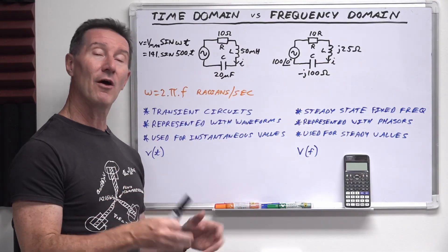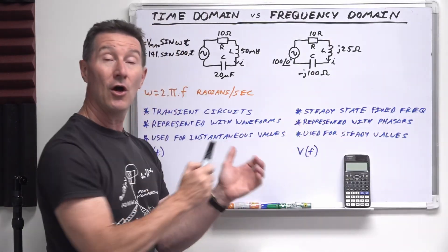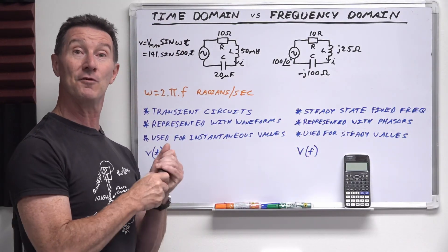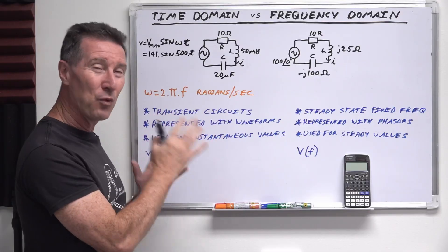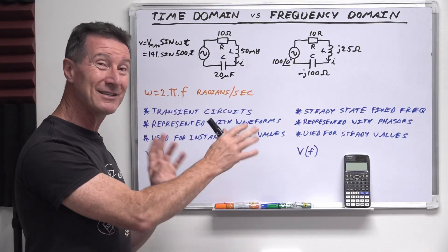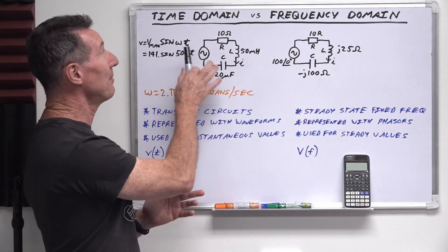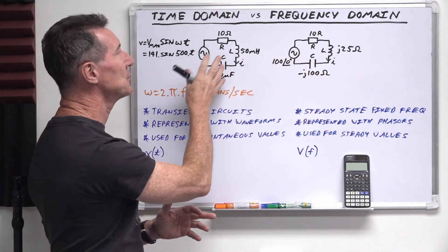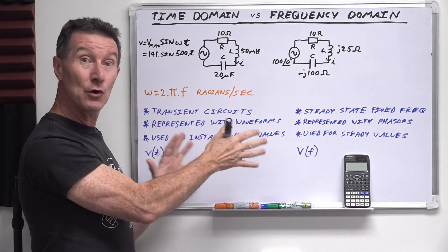Whereas your spectrum analyzer would operate in the frequency domain where you would have a frequency on the x-axis versus amplitude. And this is not quite the same thing, but kind of, sort of. When it comes to AC circuit analysis, time domain and frequency domain are just two different ways of looking at and analyzing your AC circuits.